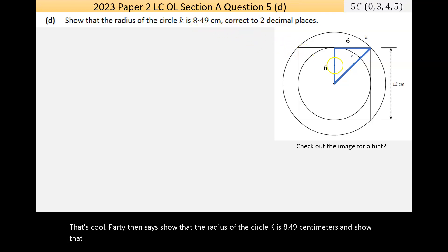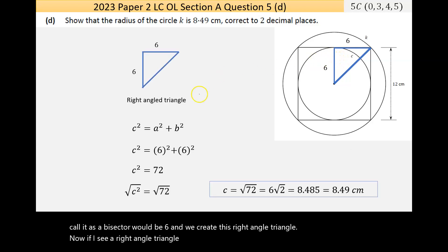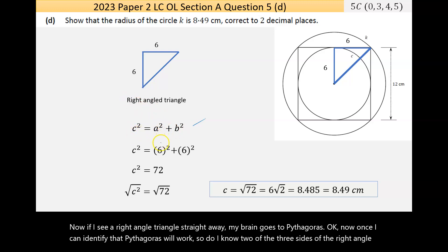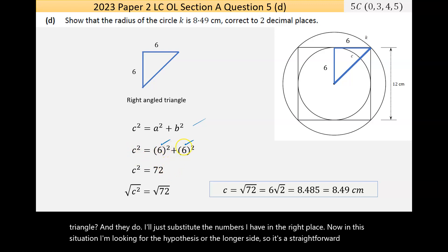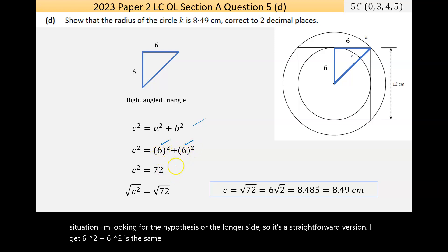Part D then says show that the radius of the circle K is 8.49 centimeters correct to two decimal places. Now there's a hint here and that's the radius of the circle is 4. Now, because the length of the square is 12, half of that—because that would call as a bisector—would be six, and we create this right angle triangle. Now if I see a right angle triangle straight away my brain goes to Pythagoras. Now once I can identify that Pythagoras will work—do I know two of the three sides of the right angle triangle?—and I do. I'll just substitute the numbers I have in the right place. Now in this situation I'm looking for the hypotenuse or the longest side, so it's a straightforward version. I get 6² + 6², which is the same thing as 36 + 36, which is 72.